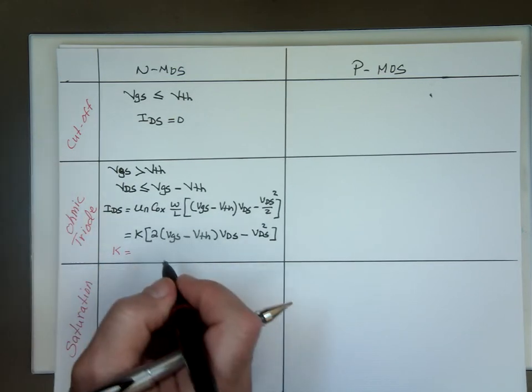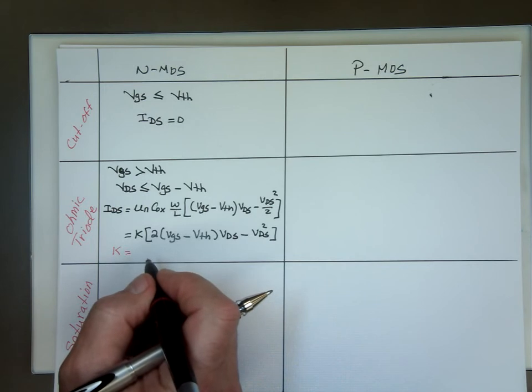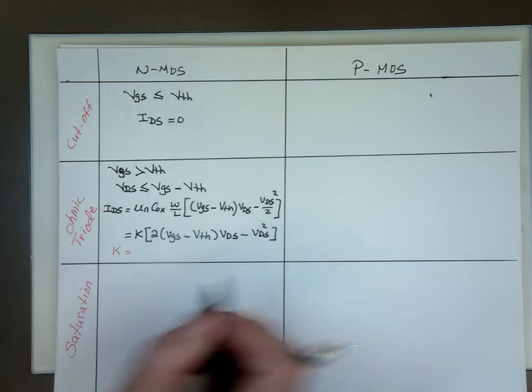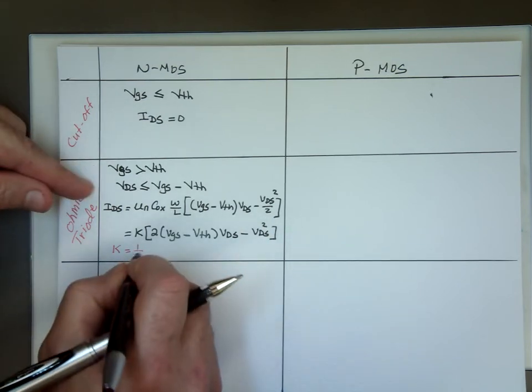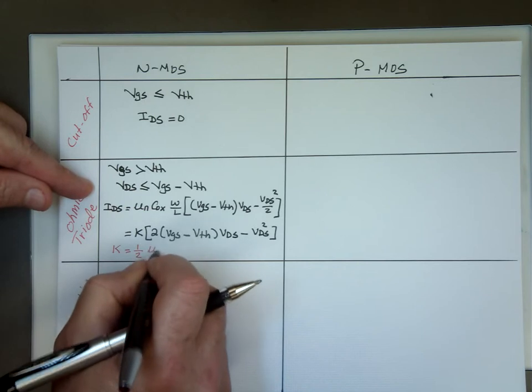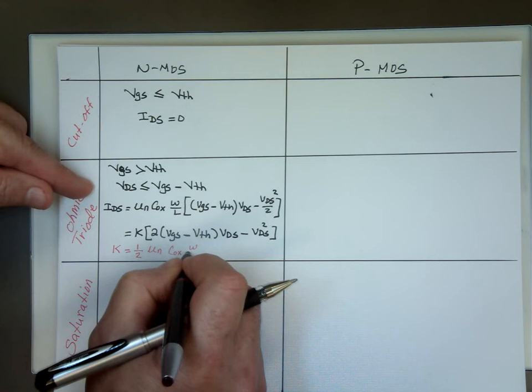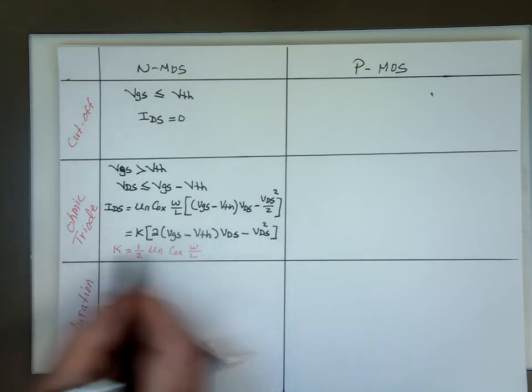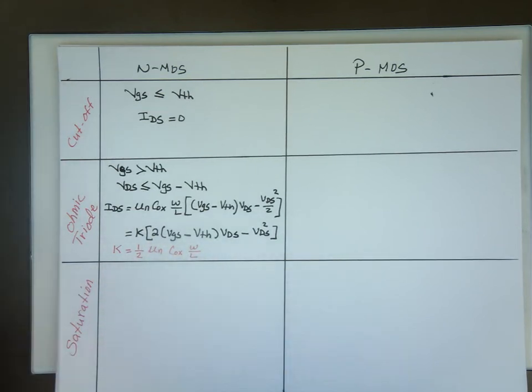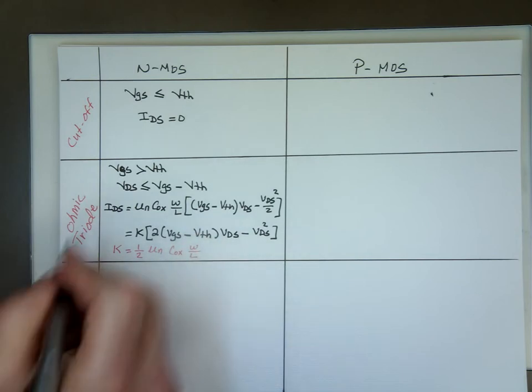And they call that current K times 2 times VGS minus V threshold times VDS minus VDS squared. So if you let K equal to that, you end up with this equation, which is a little bit easier to use than that ugly one.